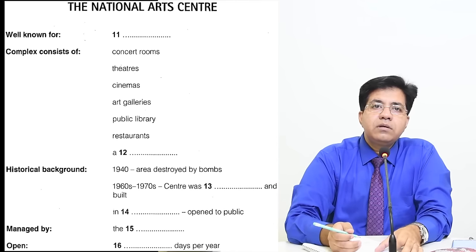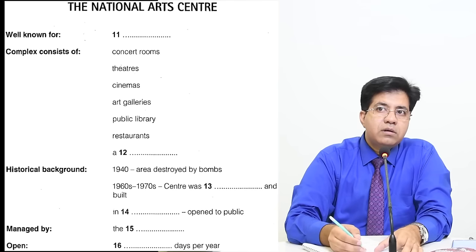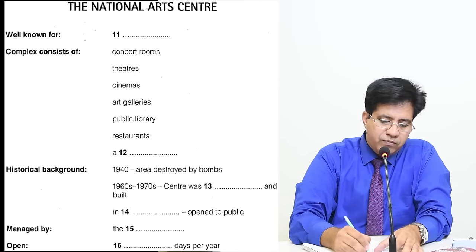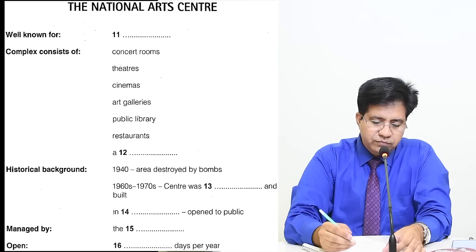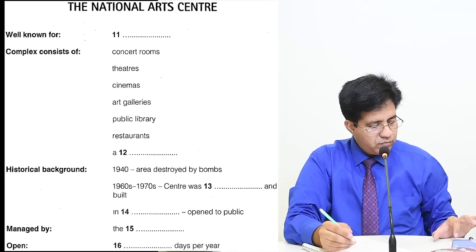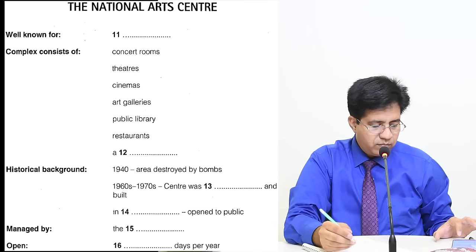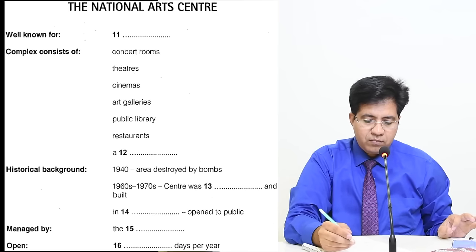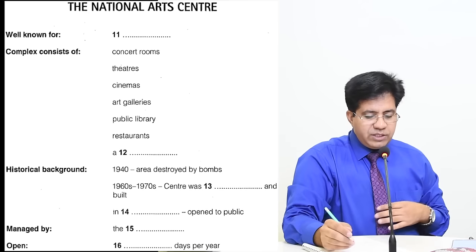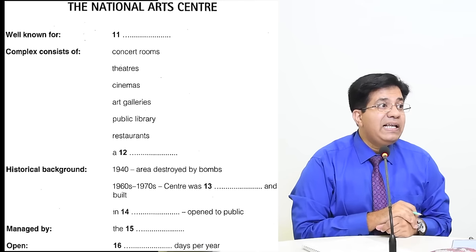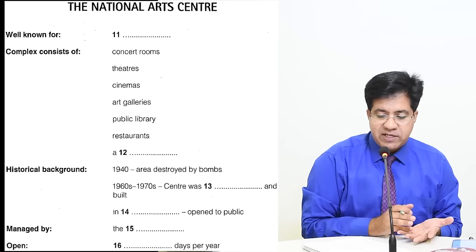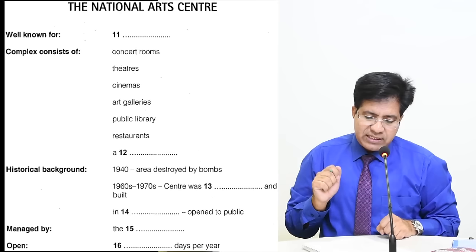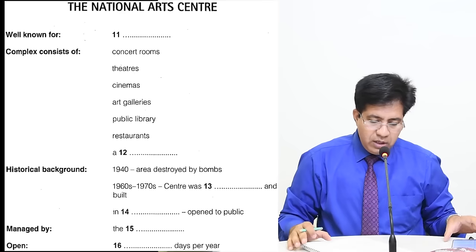Audio: 'Hello and welcome to Focus on the Arts. Today the focus is on the National Arts Center. I'm sure you've all heard of it — it's famous throughout the world as one of the major venues for classical music.' Writing only 'classical' would be wrong because it doesn't describe music. The correct answer is 'classical music.' Always make sure your answer is complete and meaningful in context.